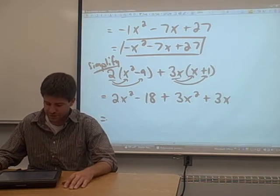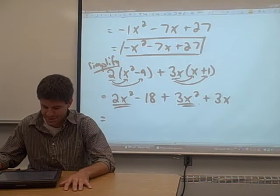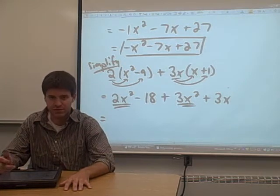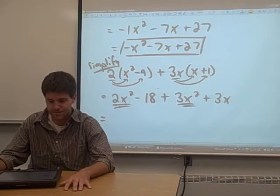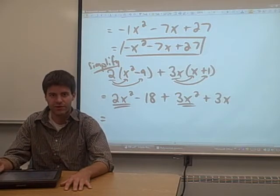Now you look for like terms, and it looks to me like there are only two terms that are alike: the x squareds. There's no other term with just an x in it to be a like term with the 3x. There's no other constants that you can add together. So the only like terms you need to combine in this case are the 2x squared and the 3x squared.